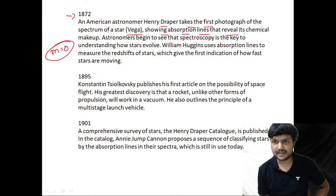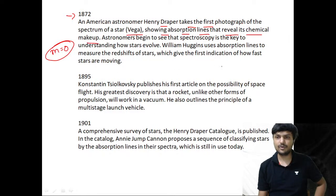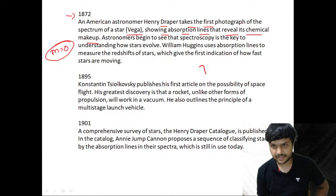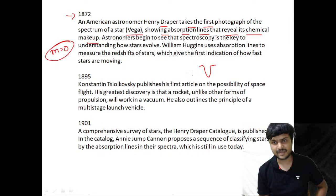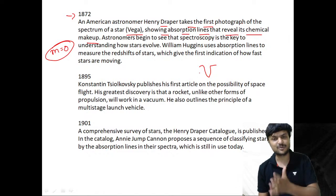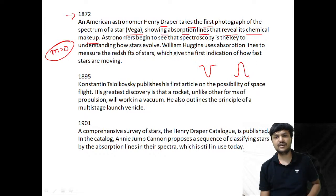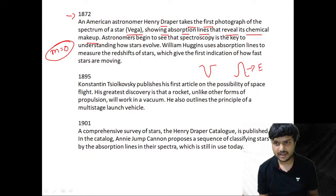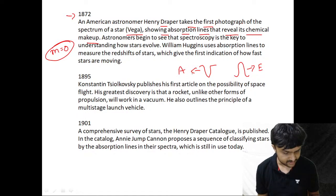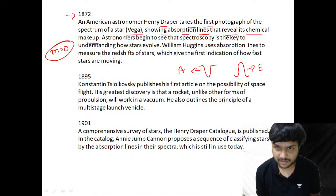In that spectrum we were able to see all the absorption lines that reveal Vega's chemical makeup. Absorption lines appear as a dip in the spectrum when you plot wavelength against intensity. In emission spectra you see a peak. So absorption shows a dip, emission shows a peak — that is the standard format for spectra.